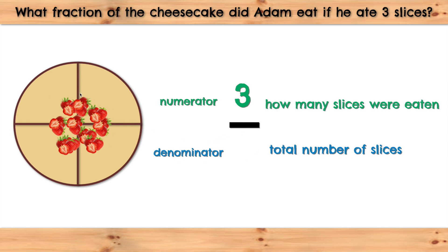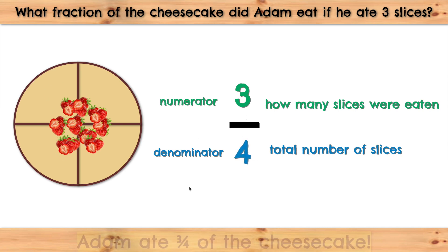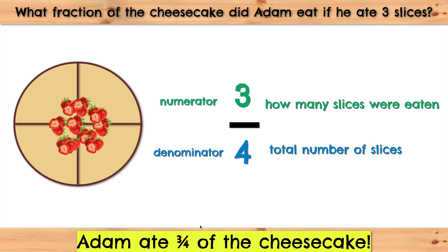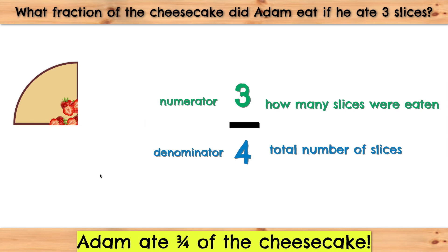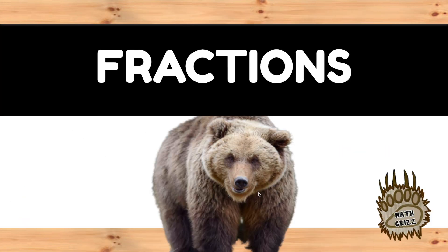The denominator is the total number of slices. We know this cheesecake has one, two, three, four total slices. So, Adam ate three-fourths of the cheesecake. How much of the cheesecake is still left to eat? We can say that one-fourth of the cheesecake is still left.